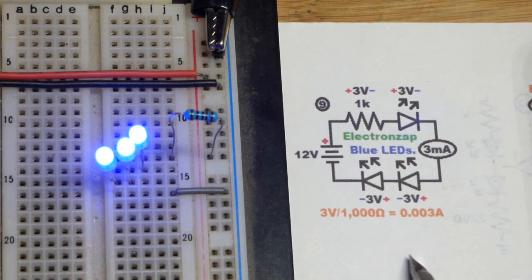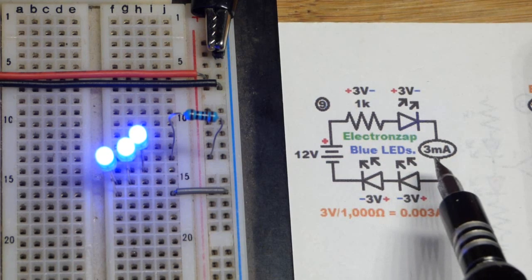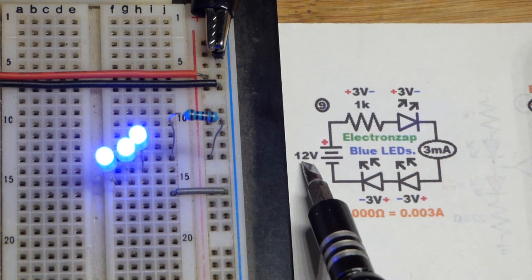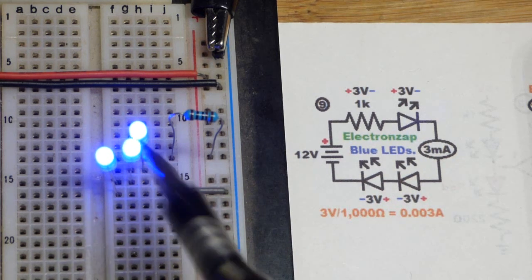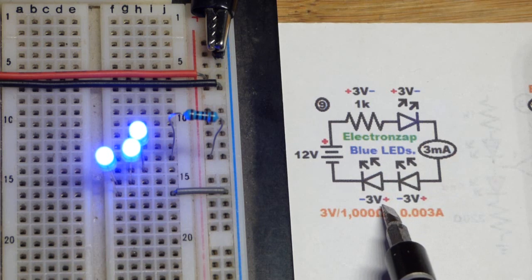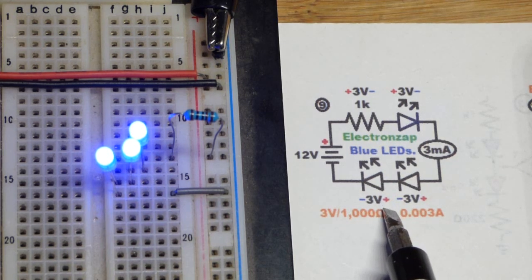So now in the last video we looked at how we could light five red LEDs with 12 volts. When it comes to blue LEDs, we can light three of them in series pretty well with 12 volts right there.